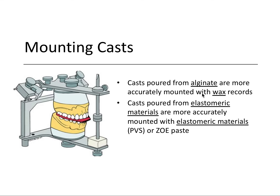A key board exam point: casts poured from alginate are more accurately mounted with wax records, while casts poured from elastomeric materials like PVS are more accurately mounted with elastomeric materials or zinc oxide eugenol paste. If you pour the casts from an elastomeric impression, it's best to mount them with the same kind of material.